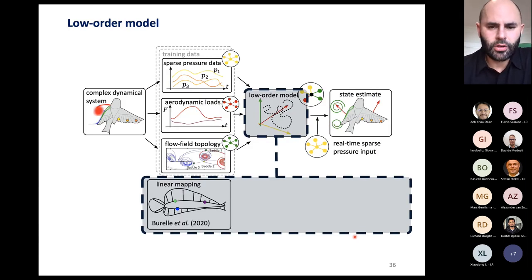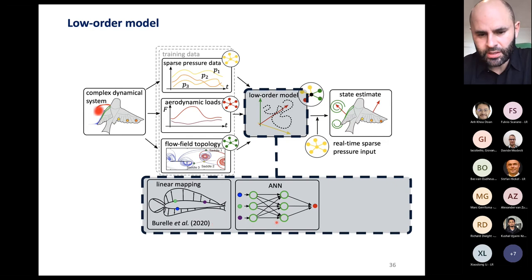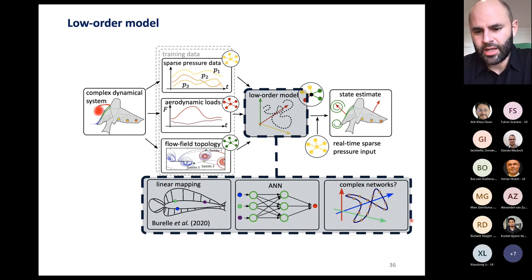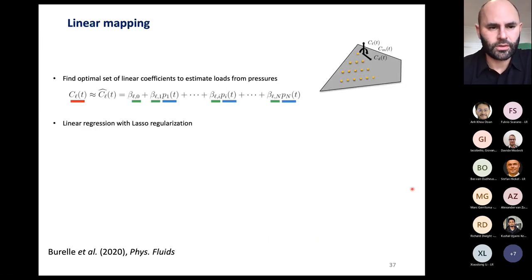So, the low-order model, as depicted by this box, can be something as simple as a linear mapping, which is something that we've tried, and it's interesting because it's simple. It can be an artificial neural network with several layers, including a physics layer, if you want to think of it that way. And it can go as far as having what we're focusing on right now or something like complex networks.